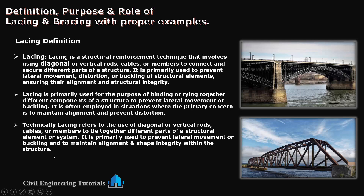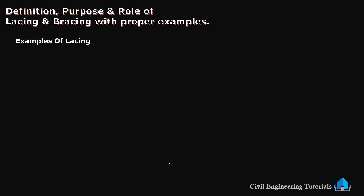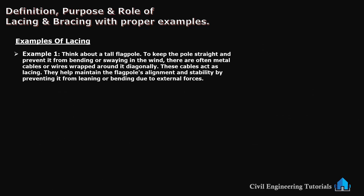You can see an example of lacing here — diagonal and vertical rods in both images. For our first example, think about a tall flagpole. To keep the pole straight and prevent it from bending or swaying in the wind, metal cables or wires are wrapped around it diagonally. These cables act as lacing. They help maintain the flagpole's alignment and stability by preventing it from leaning or bending due to external forces.